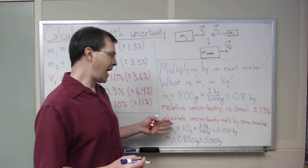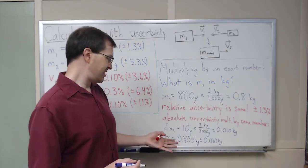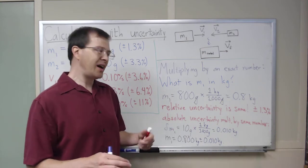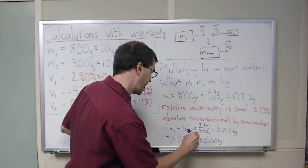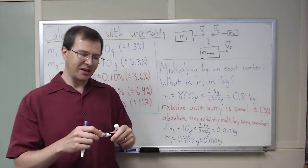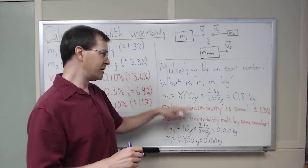Absolute uncertainty is just multiplied by the same number, and again, that's important because the units work out. Grams cancels with grams. That keeps our units working so they match.